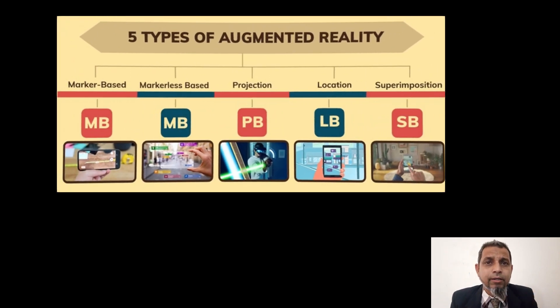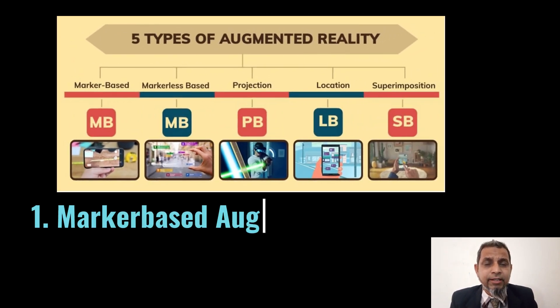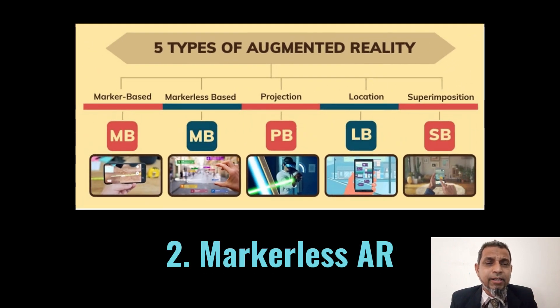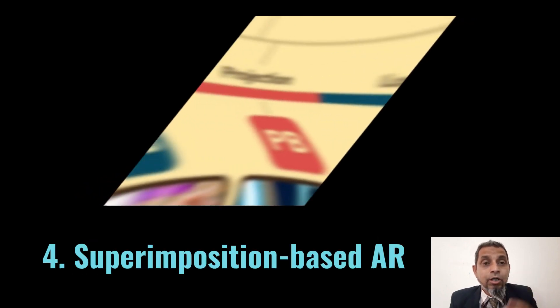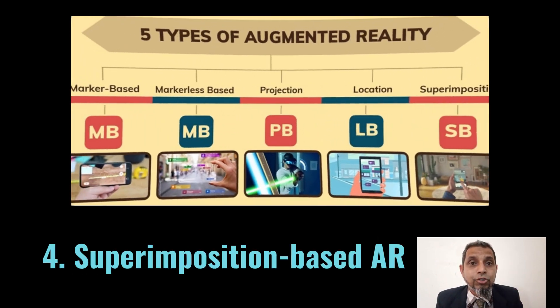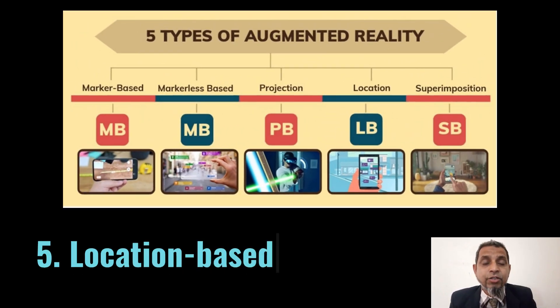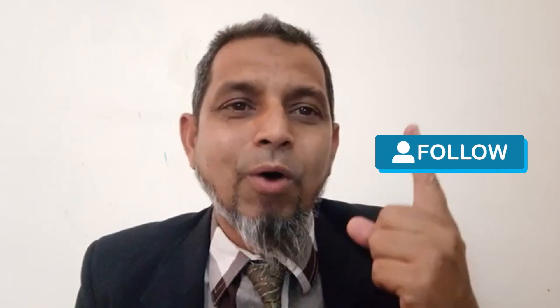Point number two: what are the types of augmented reality? There are five types of augmented reality: number one, marker-based augmented reality; number two, markerless augmented reality; number three, projection-based AR; number four, superimposition-based AR; and number five, location-based AR. I will explain each type one by one.